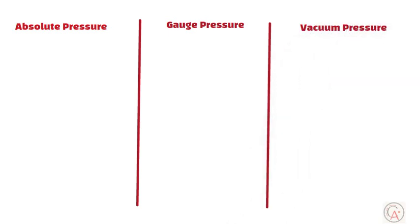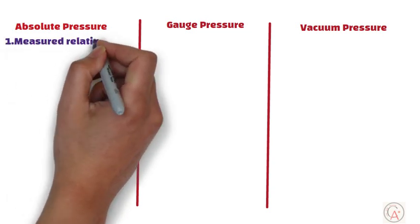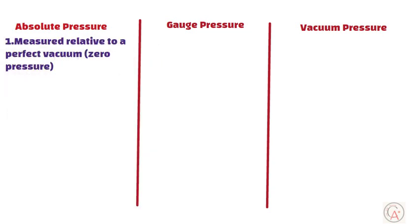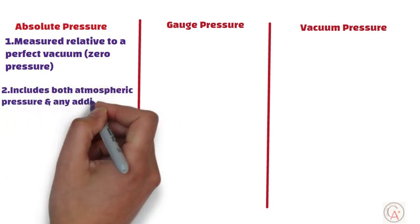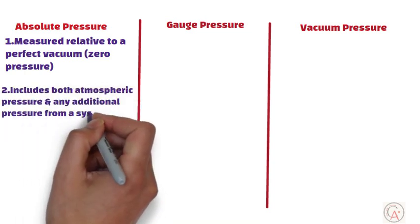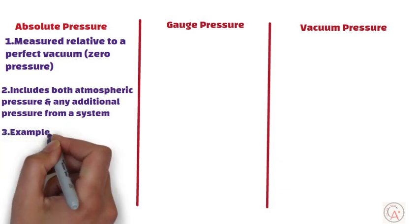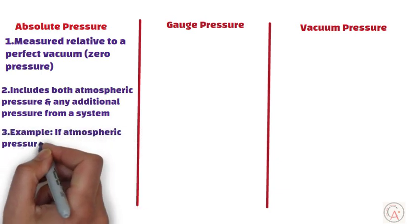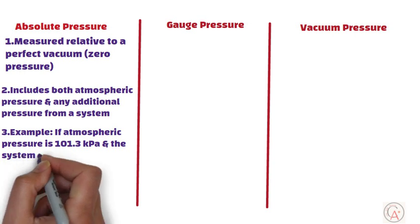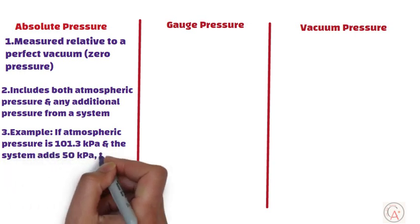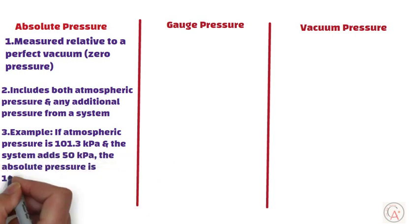Let's start with absolute pressure. Absolute pressure is measured relative to a perfect vacuum, or zero pressure. It combines atmospheric pressure and any additional pressure from a system. For example, if the atmospheric pressure is 101.3 kilopascals and the system adds 50 kilopascals, the absolute pressure becomes 151.3 kilopascals.